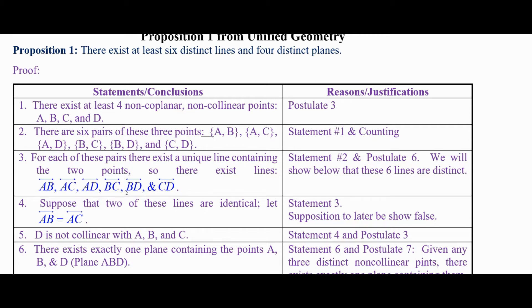Another way to say Postulate 6 is: two points determine a line. Now, how many lines is this? We don't know for sure at this point. Potentially these are six different lines, but potentially a couple could be the same. Suppose two of these lines are the same — say line AB and line AC. They have point A in common, but could they be the same line? We'll suppose that's true and then show we reach a contradiction. This is a proof by contradiction.